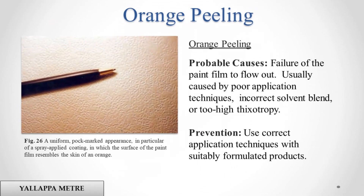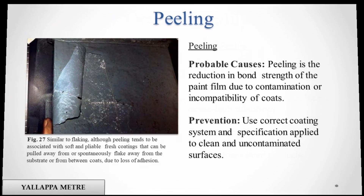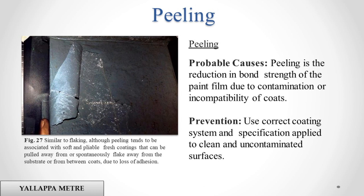Orange Peeling. Probable causes: failure of the paint film to flow out, usually caused by poor application techniques, incorrect solvent blend, or too high viscosity. Prevention: use correct application techniques with suitably formulated products. Peeling. Probable causes: peeling is the reduction in bond strength of the paint film due to contamination or incompatibility of coats. Prevention: use correct coating system and specification applied to clean and uncontaminated surfaces.